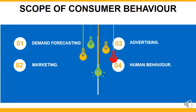Let's look at the scope of consumer behavior. The study of consumer behavior shows how individual groups and organizations select, buy, use, and dispose of goods, services, ideas, or experiences to satisfy their requirements and wants. The scope includes demand forecasting. Marketers can estimate the demand of their products if they know how a customer will behave and react after seeing their products. Demand forecasting means expectation about a future course of market demand for a product. It should be based on previous statistical data and undertaken on three levels: micro level, macro level, and industrial level.